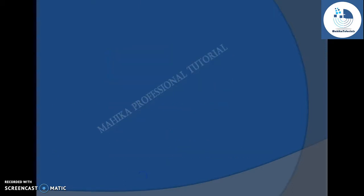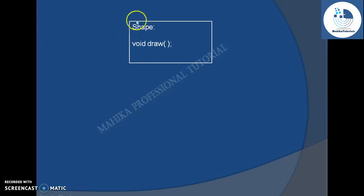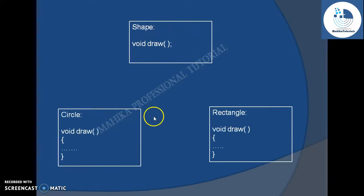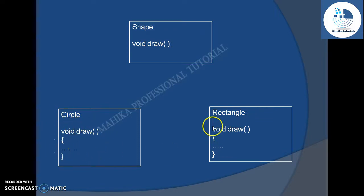Suppose if I have a shape entity, I know that there will be one functionality — draw — which can be used to draw a shape, but here we are not giving any definition for this functionality. We are just specifying that a shape can be drawn. This is the idea of an abstract method. Later on, we can create different classes which provide the definition of the draw method in different ways — like a circle can have its own draw method, and similarly a rectangle can have its own draw method.